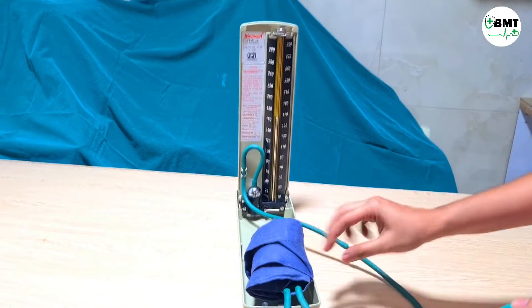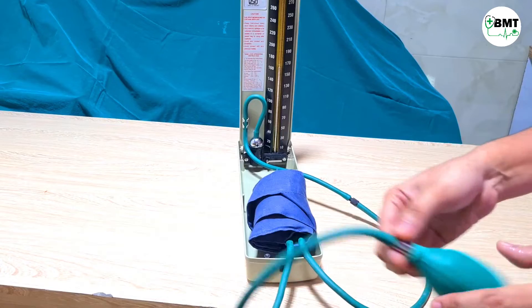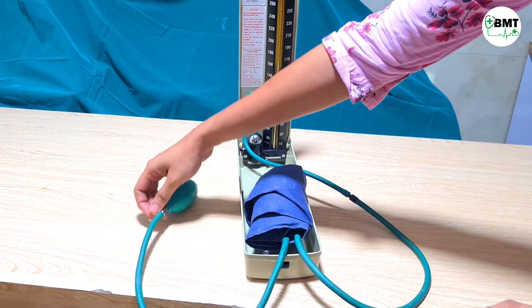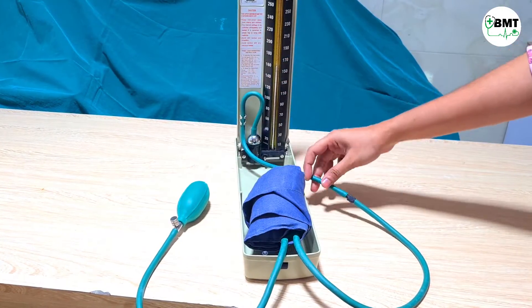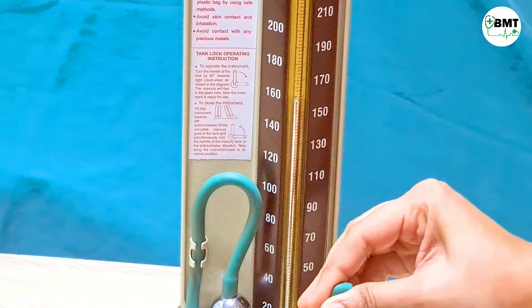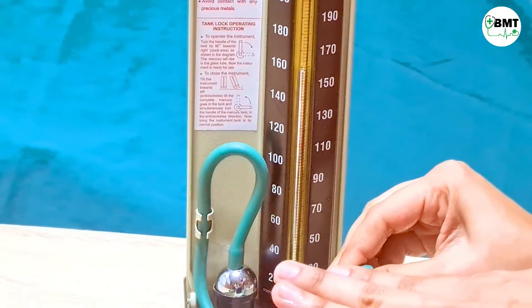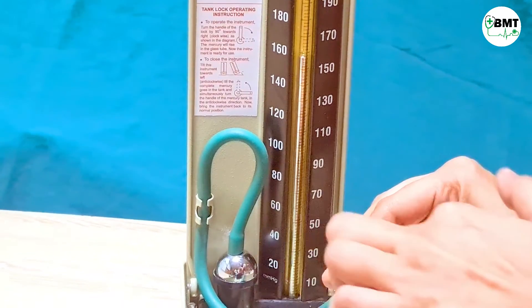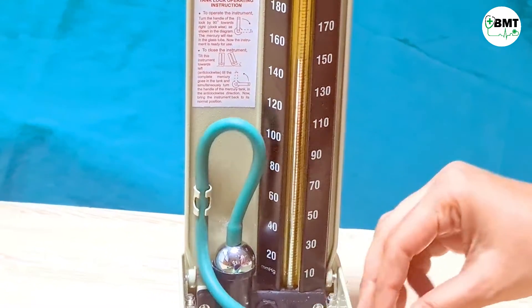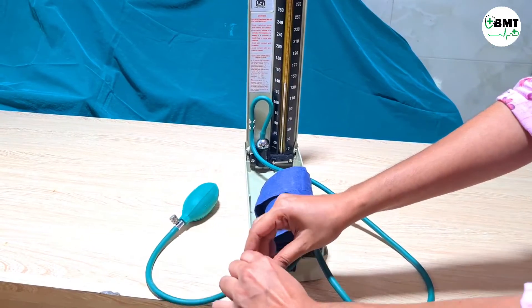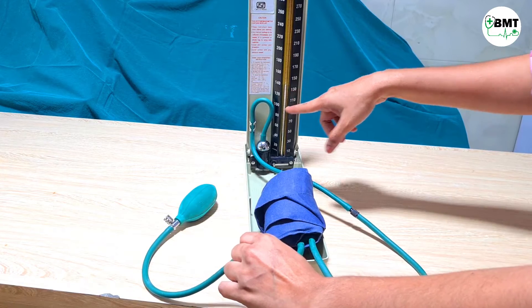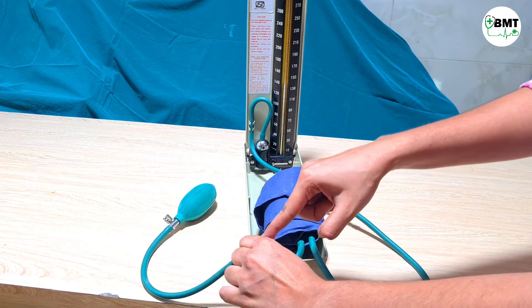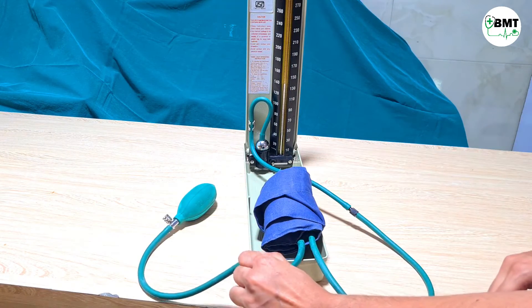The leakage can be here, or in this bladder, or in this valve, anywhere. So how to check it? First, pinch it over here. Now this is stable. This means there is no issue from this point to this point. Now pinch it over here. Now it is stable, which means there is no issue till here.